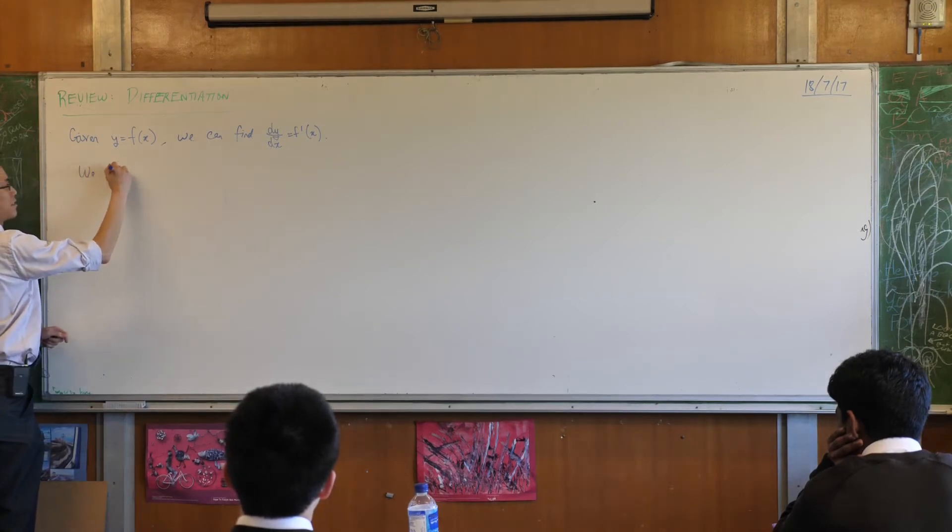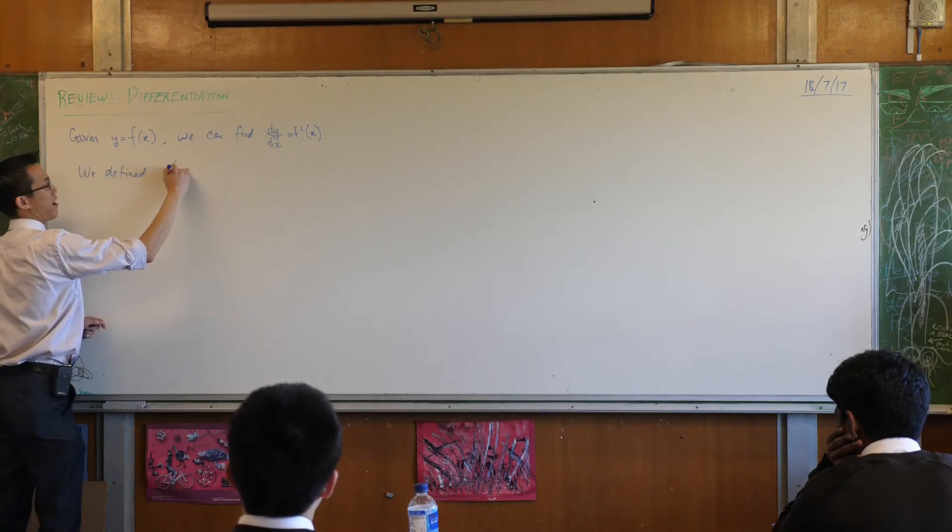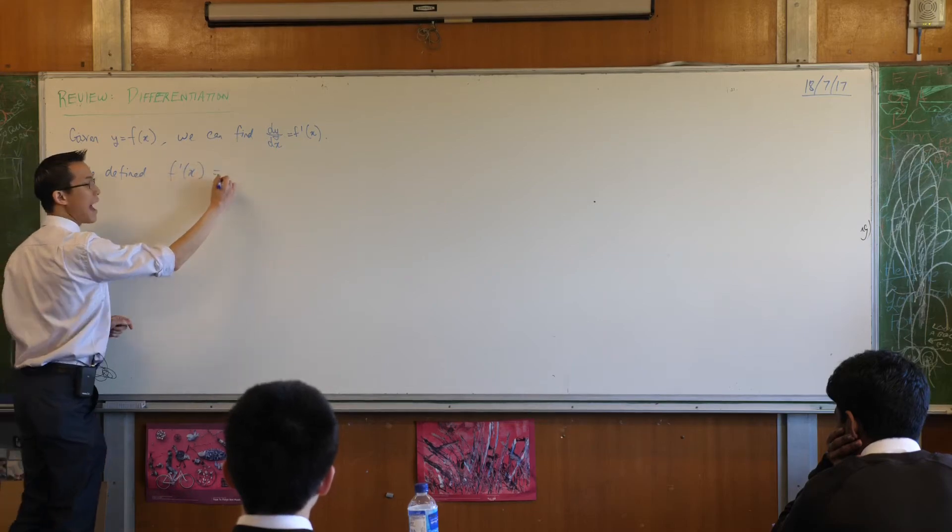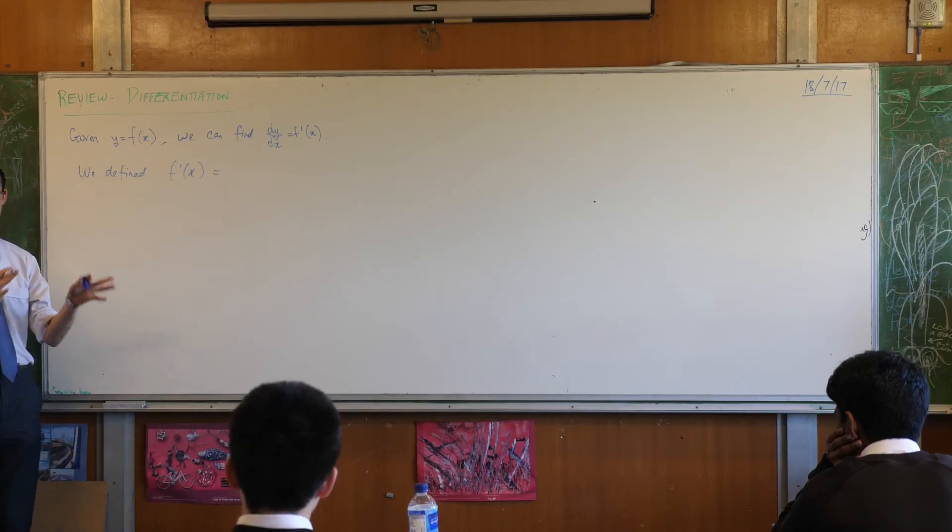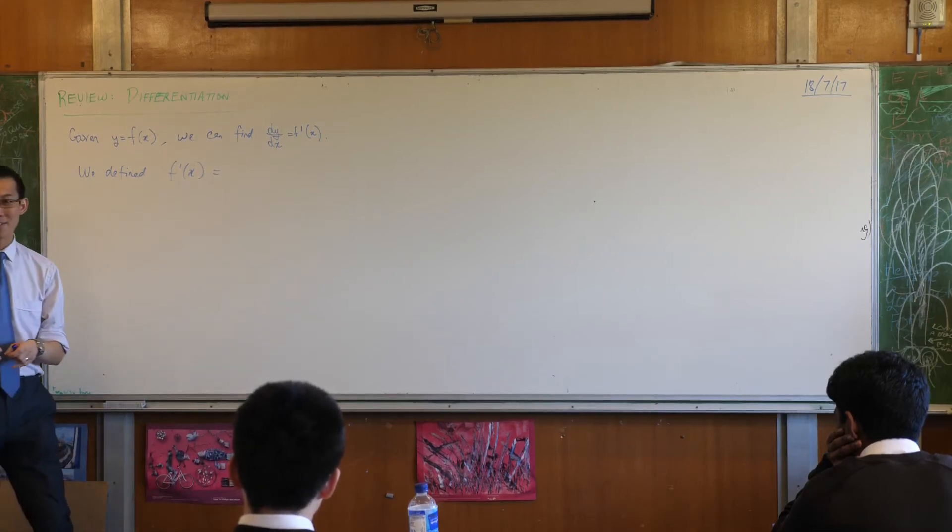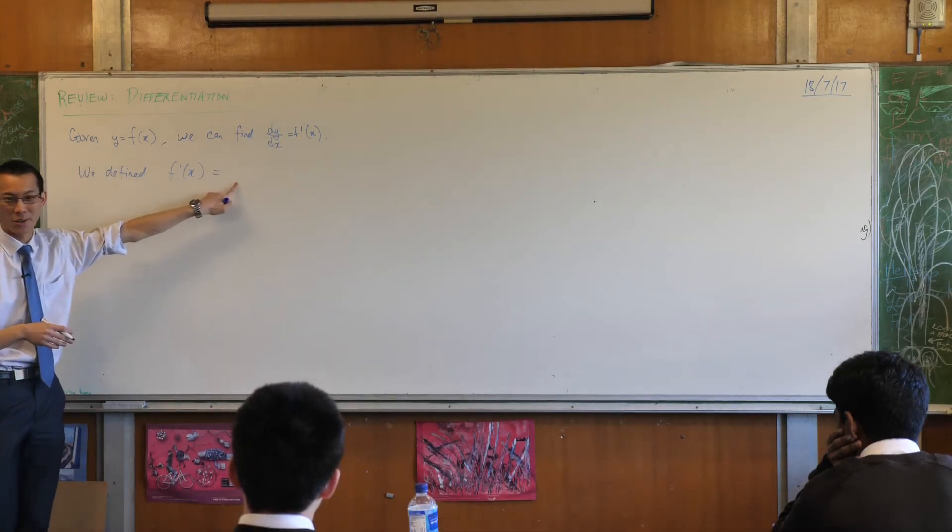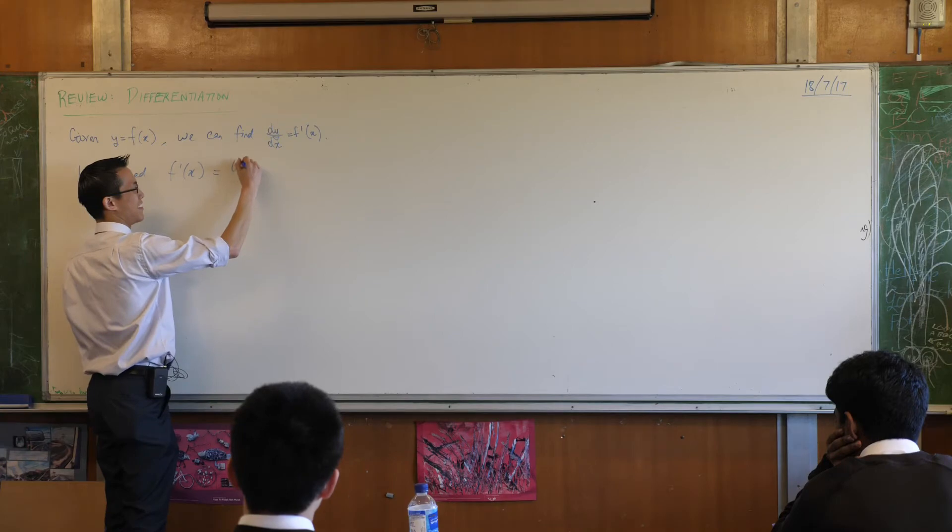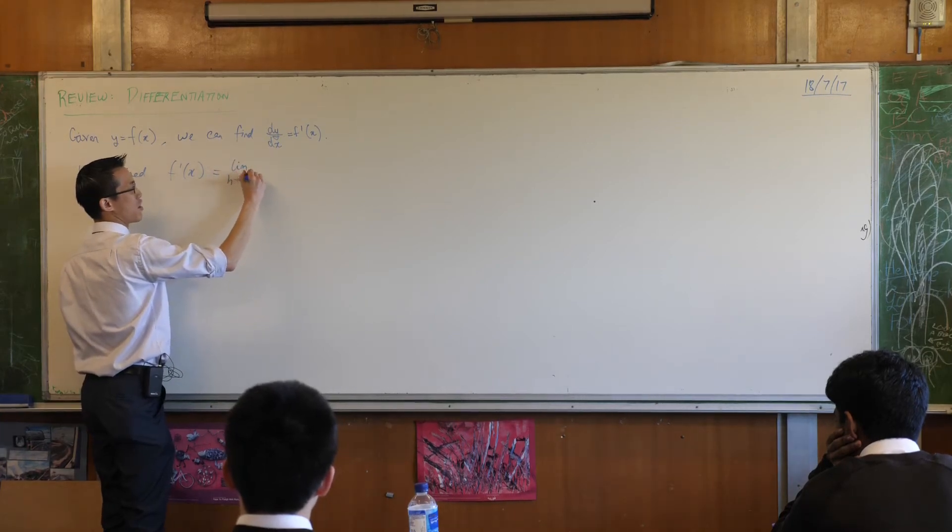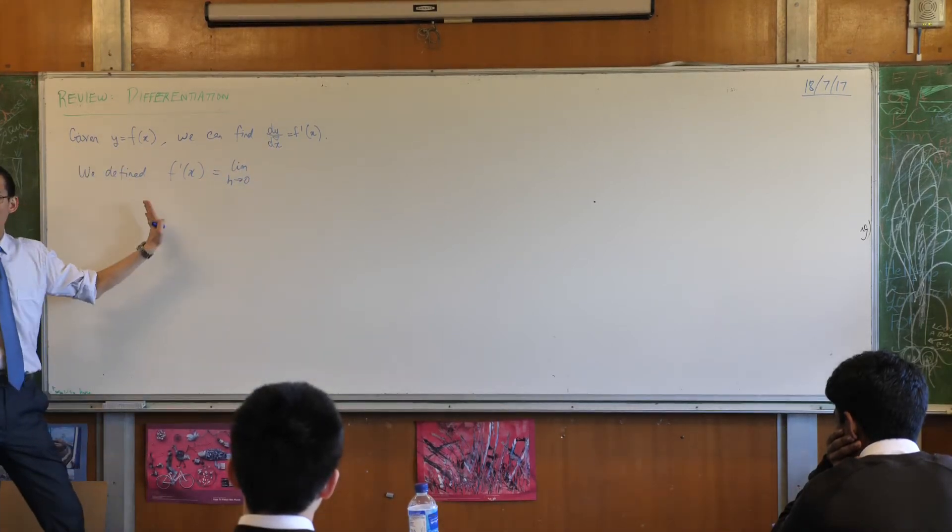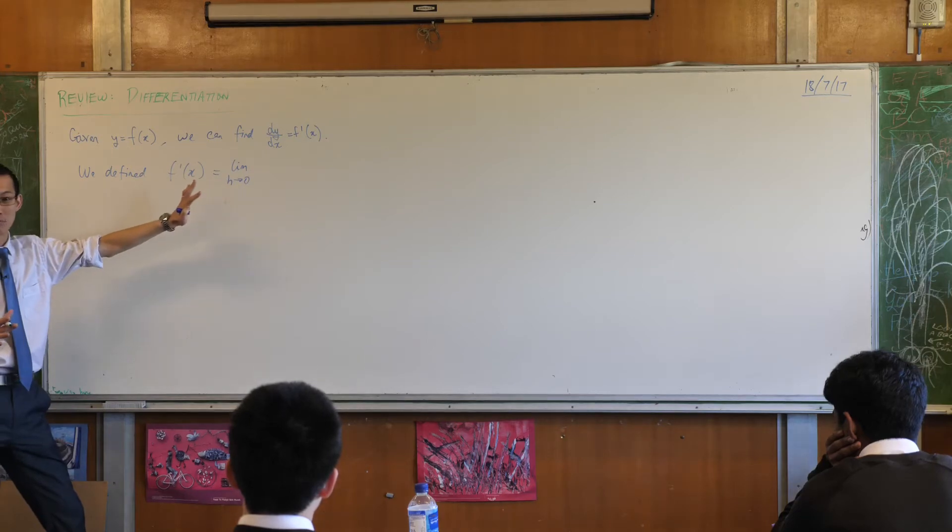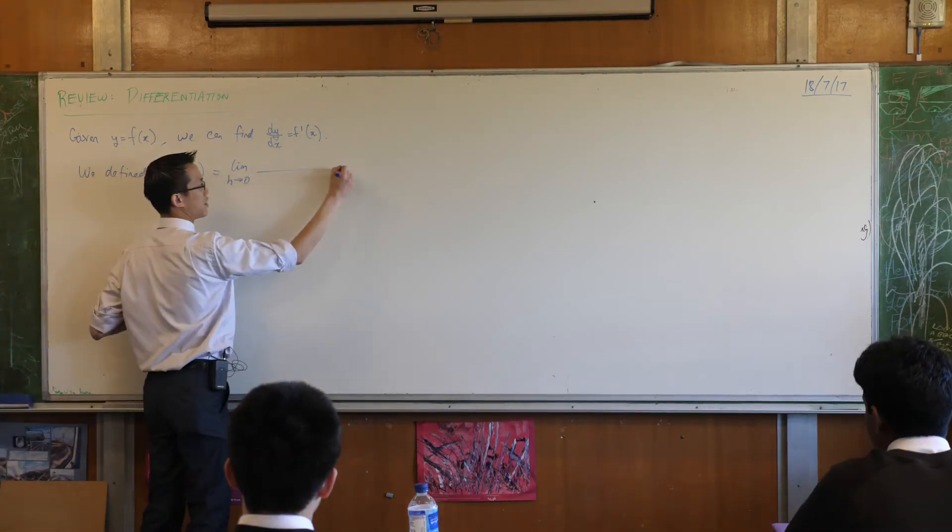We defined f dash x as... now think, we had to introduce a bit of heavy duty machinery and new notation. Do you remember what the very first thing we had to write was? The limit, very good. Limit as h approaches zero. What follows is going to be based on rise over run, so there's a fraction of some kind.